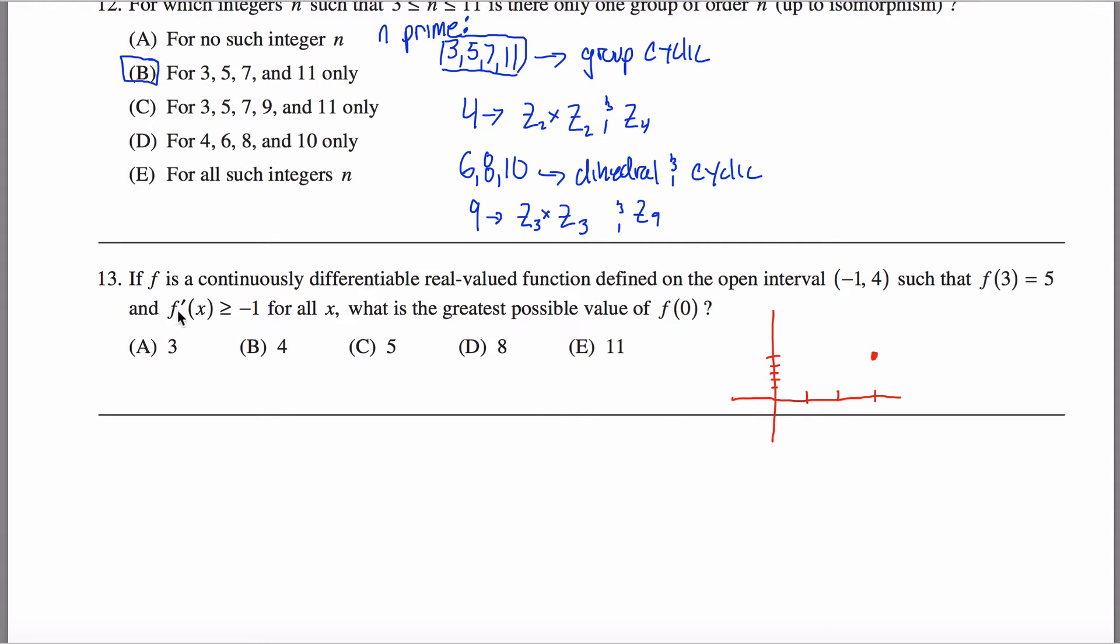And the other thing I know is that f prime of x, so the slope of the tangent line to this graph, is greater than or equal to negative one for all x values, and what I'm asked is what is the greatest possible value of f of zero?